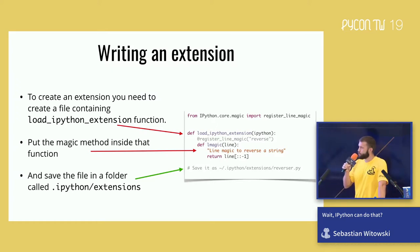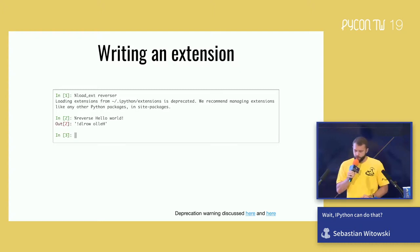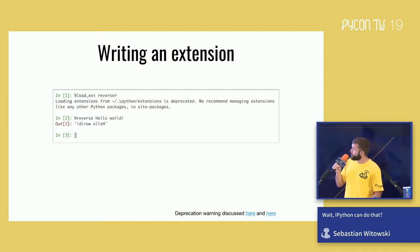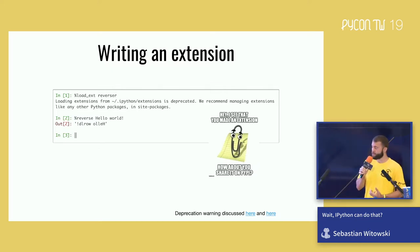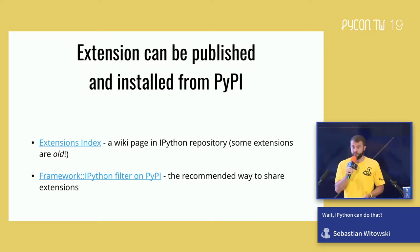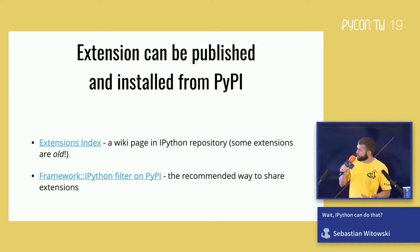To create an extension you need to create a file containing a `load_ipython_extension` function — that's the function executed when you load it. Put your magic method inside that function, and save the file in a folder called `ipython/extensions`. When you start IPython and load your extension, the magic function will automatically start working. You might notice a deprecation warning — it's not really deprecated, it's just IPython's way of saying 'hey, how about you share this extension with others?' Extensions can be published on PyPI, and to find existing ones, check the extension index wiki page on the IPython repository or the IPython filter on the PyPI package index.